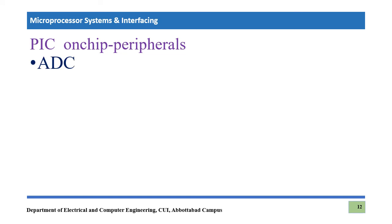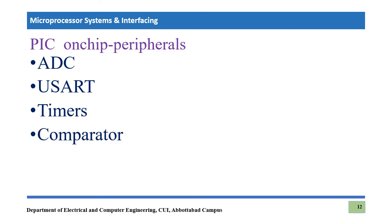Certain peripherals are available on-chip in the PIC18 family: ADC (Analog to Digital Converter), USART — an important serial communication protocol, timers for synchronization, and a comparator, which is a device used to compare analog and digital signals. However, our specific microcontroller PIC18F452 does not have a comparator, so we will not be studying that in this course.